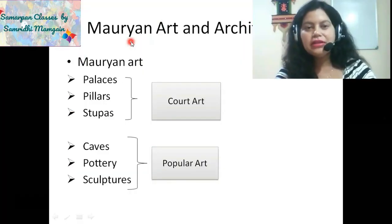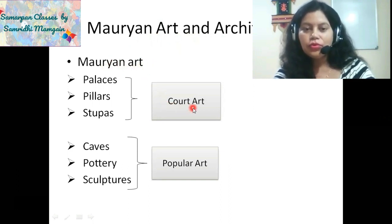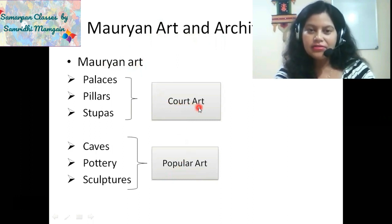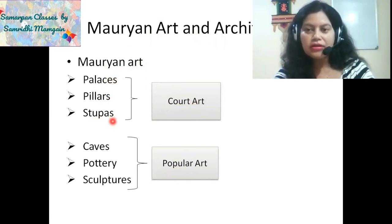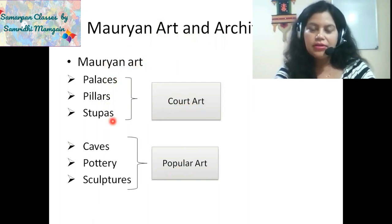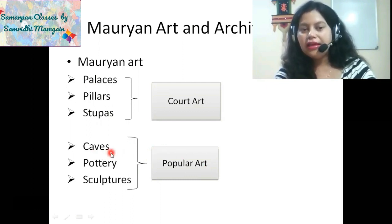Starting with today's lecture on Mauryan art and architecture. In Mauryan art, we will study about the court art and the popular art. Court art basically means the art that received direct patronage of the rulers — so that means the palaces, pillars, and stupas. Popular art was basically the individual initiative, so the caves, pottery, and sculptures come under this category.